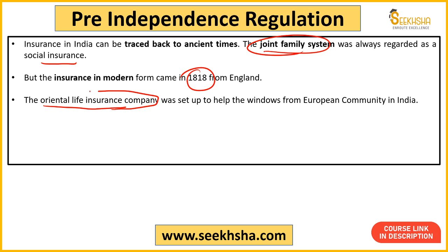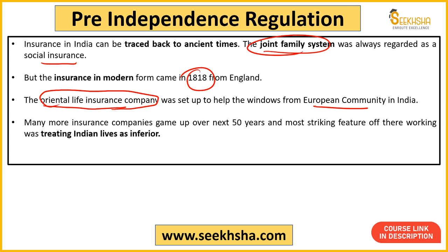हिंदुस्तान में सबसे पहले Oriental Life Insurance Company को set up किया गया था। अगर exam में पूछा जाए 'which was established the earliest in India' तो वो Oriental Life Insurance है। इसको set up करने का मकसद हिंदुस्तानियों की help करना नहीं था — यह established किया गया था European communities, यानी Britishers के लिए। अगले 50 सालों में और बहुत सी insurance companies आईं, लेकिन ये सारी mainly European community की needs पूरी कर रही थीं।